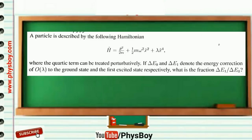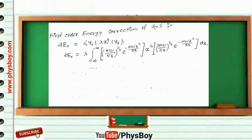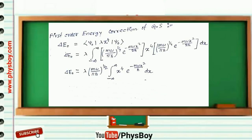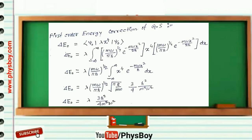Now we have to calculate the ratio of the first-order energy correction of the first excited state to that of the ground state. First, the first-order energy correction for the ground state from time-independent perturbation theory: delta E naught equals the expectation value of lambda x to the power 4 in state psi 0. By substituting the ground state wave function and evaluating the integral using the general Gaussian integral formula with n equals 2 for the x to the power 4 term, we get delta E0 equal to 3 lambda h-bar squared by 4 m squared omega squared.